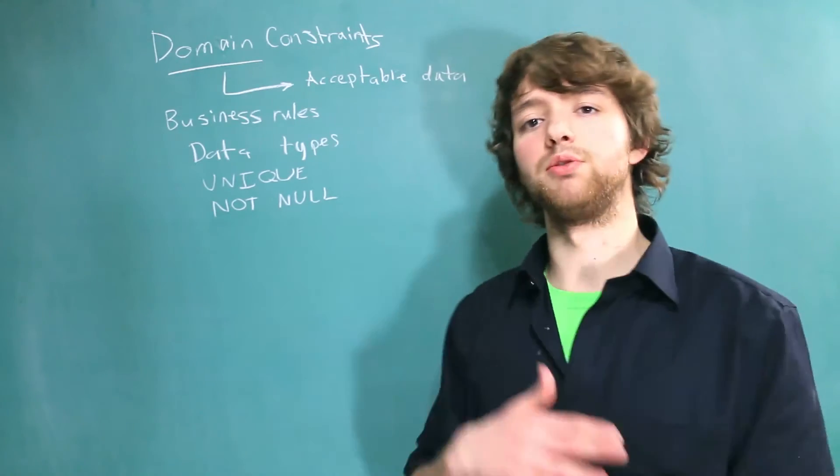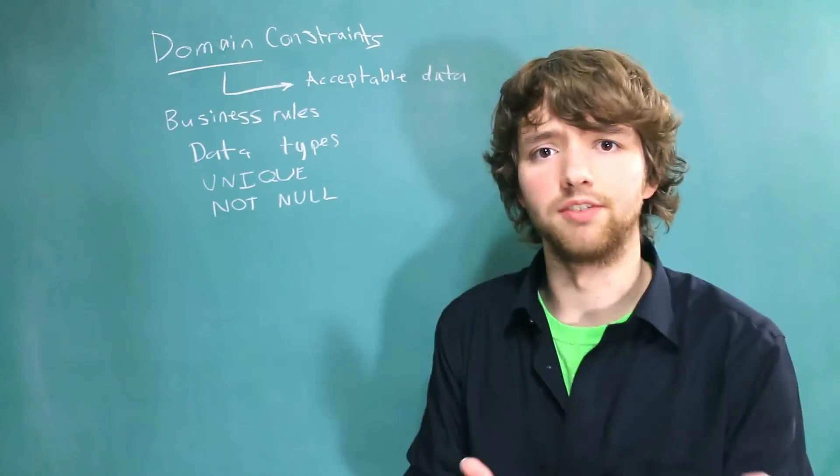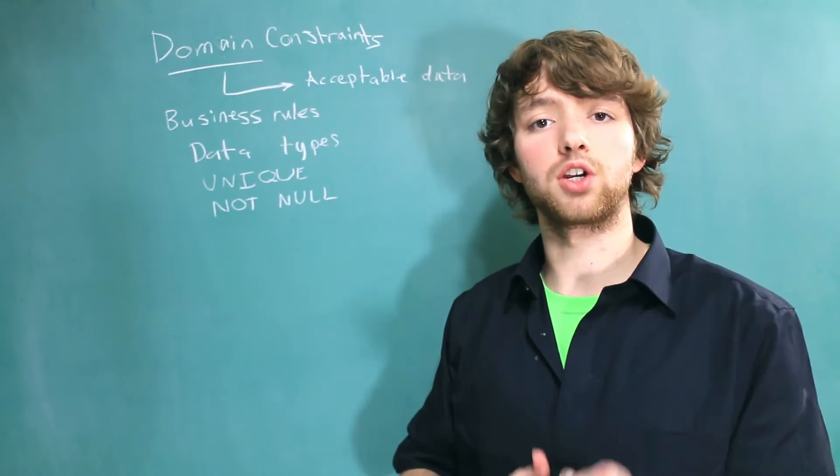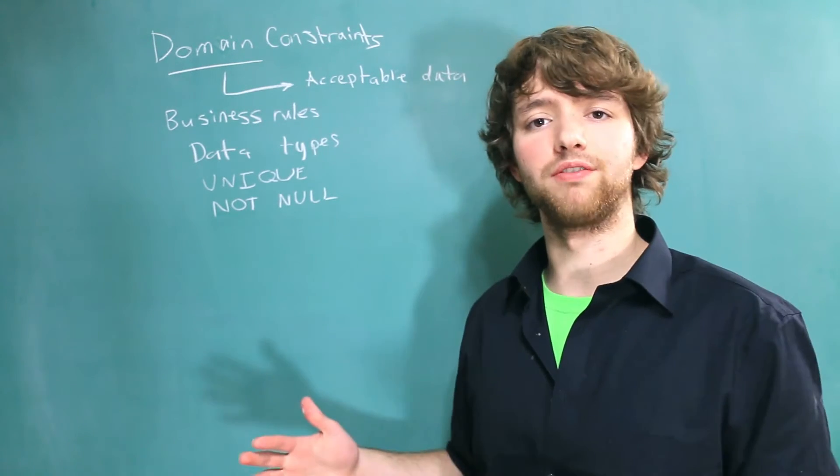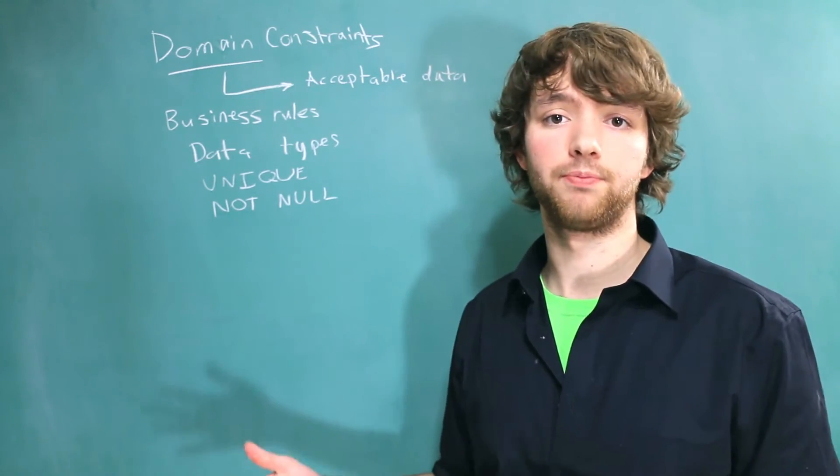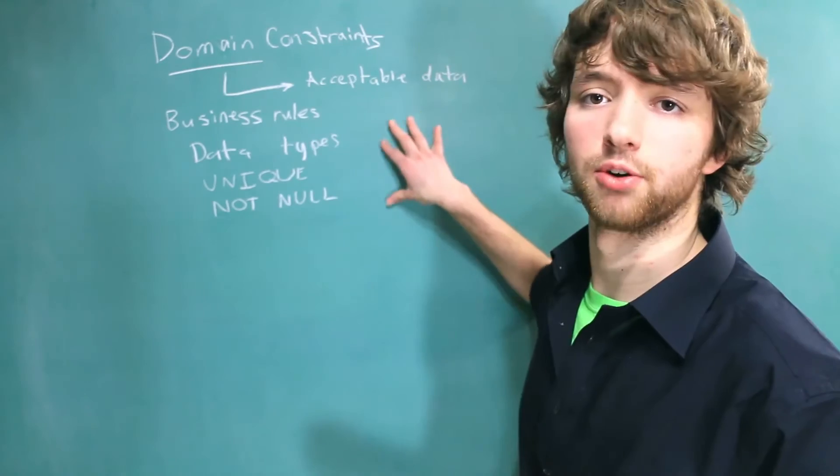So let's say a value has already been entered of 17, for example, and that column is labeled unique and you try to put 17 in again, it's not going to let you do that. Or if you don't put a value in at all and it's labeled as not null, it's not going to let you do that either. These are the general ways how to restrict data.